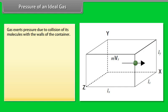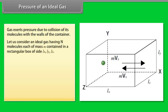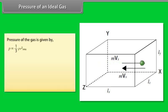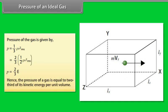Gas exerts pressure due to collision of its molecules with the walls of the container. Let us consider an ideal gas having N molecules, each of mass M, contained in a rectangular box of site LX, LY, LZ. Kinetic energy per unit volume is given by E equals half rho Vrms square. Pressure of the gas is given by E equals 2 by 3 of E. Hence, the pressure of a gas is equal to two-third of its kinetic energy per unit volume.